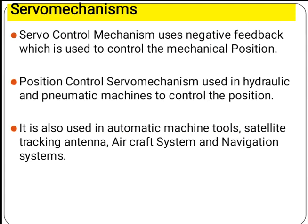Position control servomechanism is used in hydraulic and pneumatic machines to control their position. It is also used in automatic machine tools, satellite tracking, antenna, aircraft systems and navigation systems. The servo mechanism is used for the precise control of position or the angle of rotation.